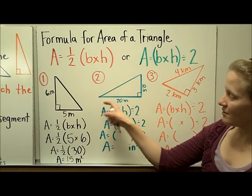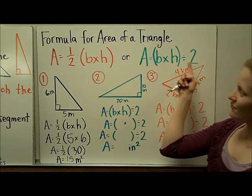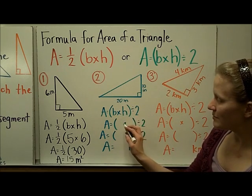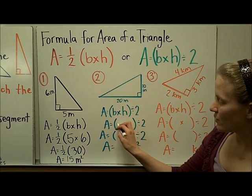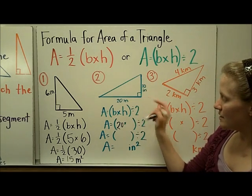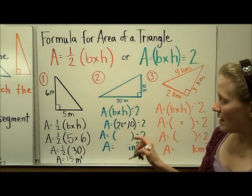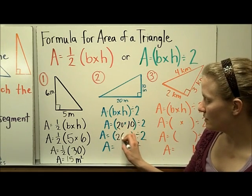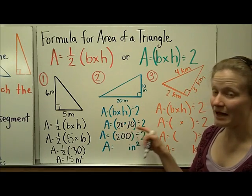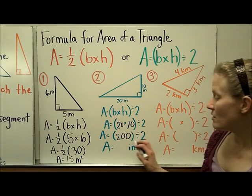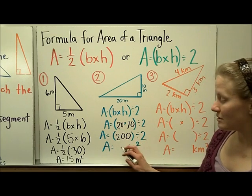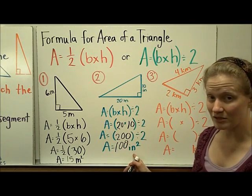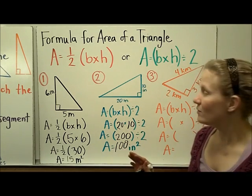On the next one, the base here is longer. Base times height. The base was 20, the height was 10. I'll do what's inside parentheses first. 20 times 10 is 200. You can multiply two times one and add two zeros. 200 divided by two is 100. So the area of this triangle is 100 square inches. Remember each time area uses square units.